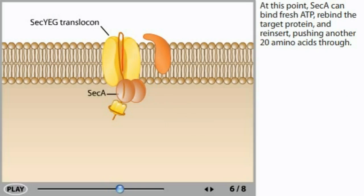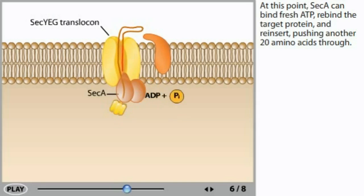At this point, SecA can bind fresh ATP, rebind the target protein, and reinsert, pushing another 20 amino acids through.